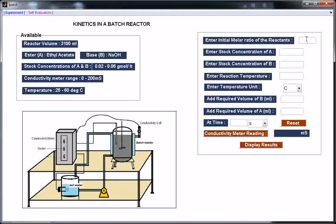Enter initial ratio of reactants to 1.1. Enter stock concentration of A. Let us enter 0.03. Enter stock concentration of B. Let us enter 0.035. This stock concentration of A and B should be in this range because available range is this much.